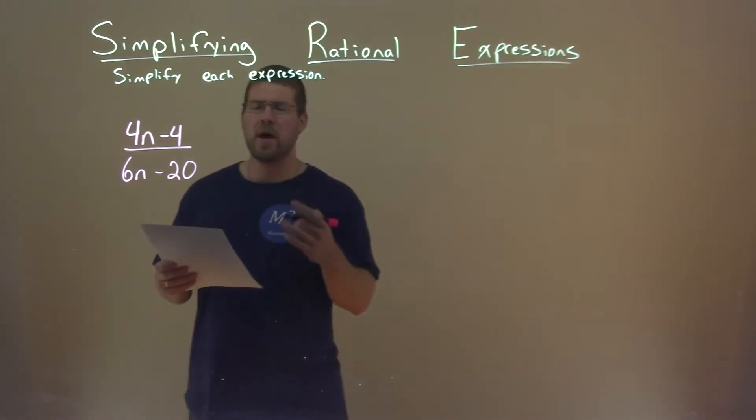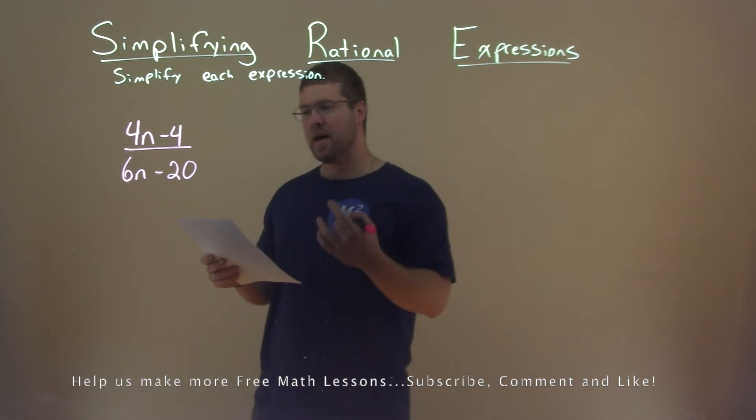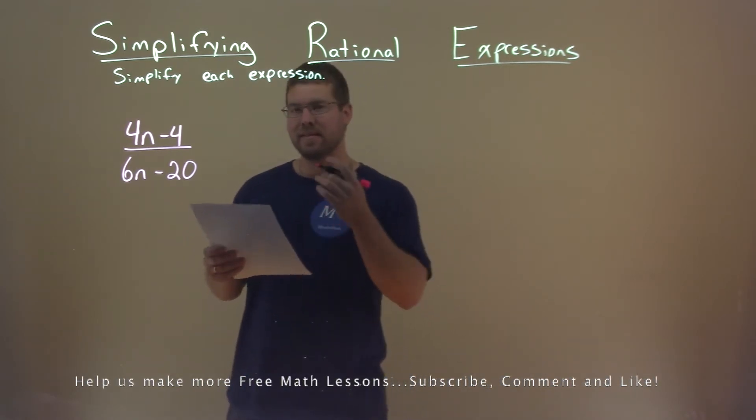We're given this problem right here, 4n minus 4 over 6n minus 20, and we want to simplify this expression.